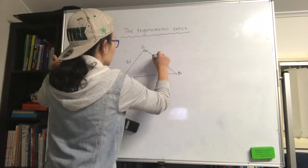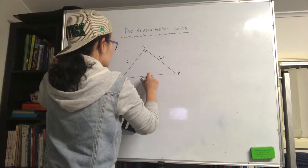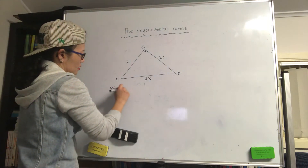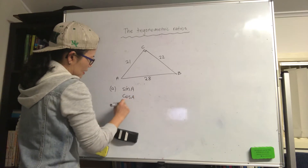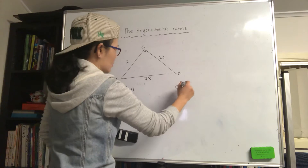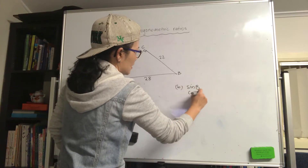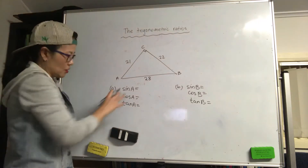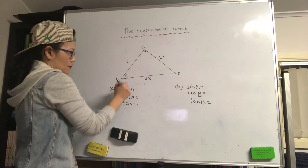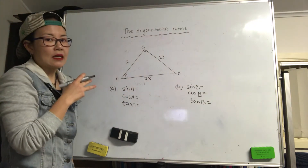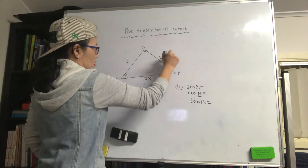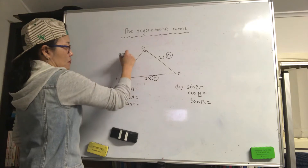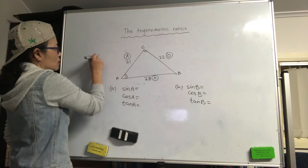We need to find sine A, cos A, tan A, and then sine B, cos B, tan B. First, I'm going to focus on angle A and label the sides. The side opposite angle A is the opposite, the side opposite the right angle is the hypotenuse, and the side between the two angles is the adjacent. I'll write SOH-CAH-TOA on the side.